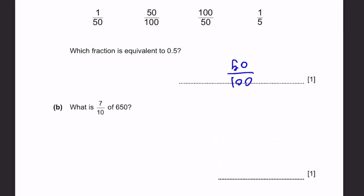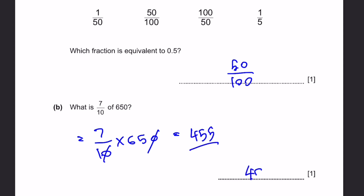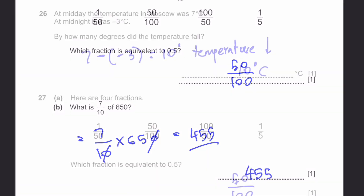Question 27B. What is 7 tenths of 650? That equals 7 over 10 multiplied by 650 — we cancel out zeros, giving 7 times 65, and when you calculate this, you get 455.